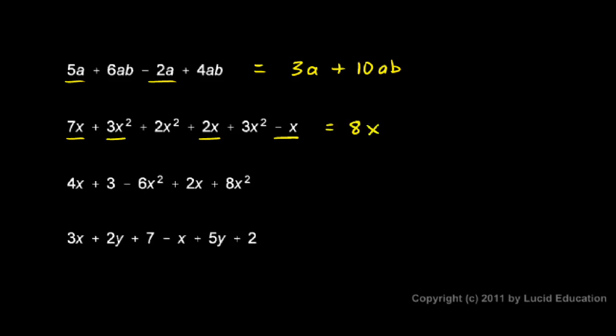And then I have a 3x squared. And here's another x squared term. And another x squared term. And underlining those a little bit differently just helps me visually see them all together. And 3x squared plus 2x squared is 5x squared plus another 3x squared gives me a total of 8x squared. So 8x plus 8x squared.